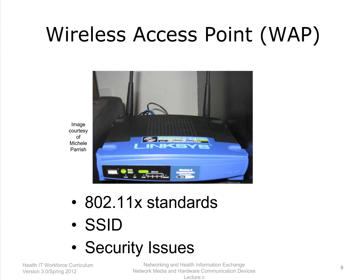A wireless access point (WAP) is used to provide wireless access to a network using the 802.11x standards. Each WAP has a service set identifier, or SSID, which wireless devices use to make an association with the WAP. Wireless is, by default, an unsecure transmission method, so you should set up wireless encryption standards on your WAP, requiring each wireless device to have a password to authenticate and to encrypt data transmitted between the WAP and the wireless device. Be aware that unsecure WAPs are a big security risk. Most home WAPs are a combination of a switch with multiple ports, a router that moves packets between wired and wireless networks, and a wireless access point that provides access to wireless networks.